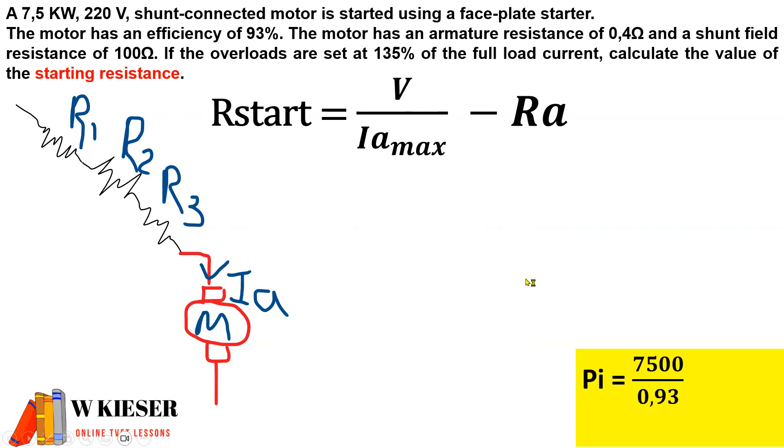So how are we going to do this? You'll notice that we are given the efficiency of 93%. In order to calculate the input power we take the output power of 7.5 kilowatts multiplied by 1000, divide by 0.93, and that gives us an input power of 8064.516 watts. The input power is larger and the output power is smaller.